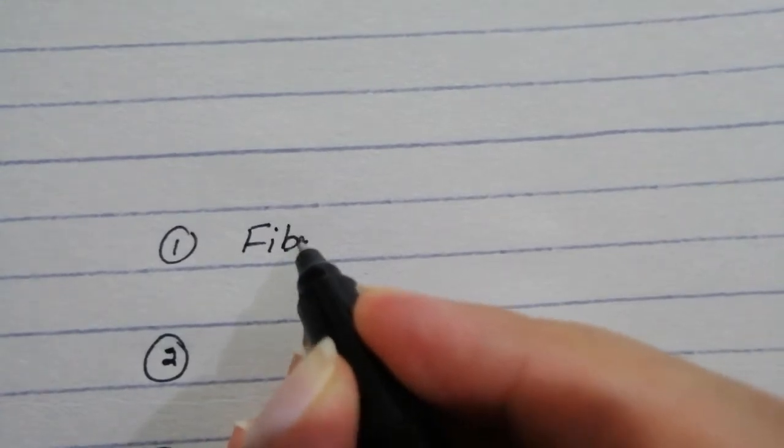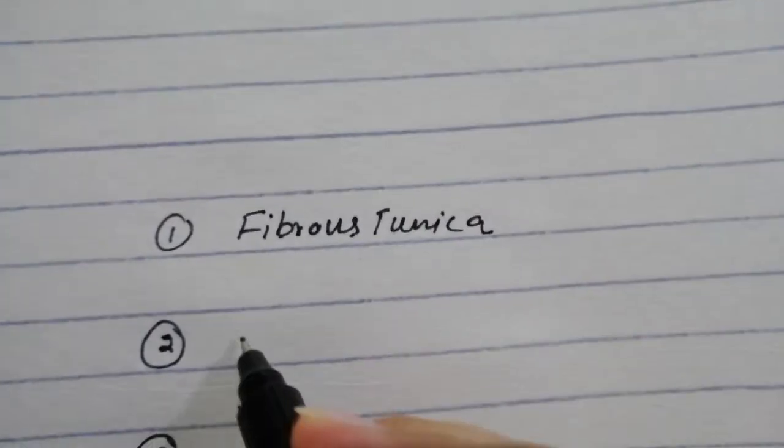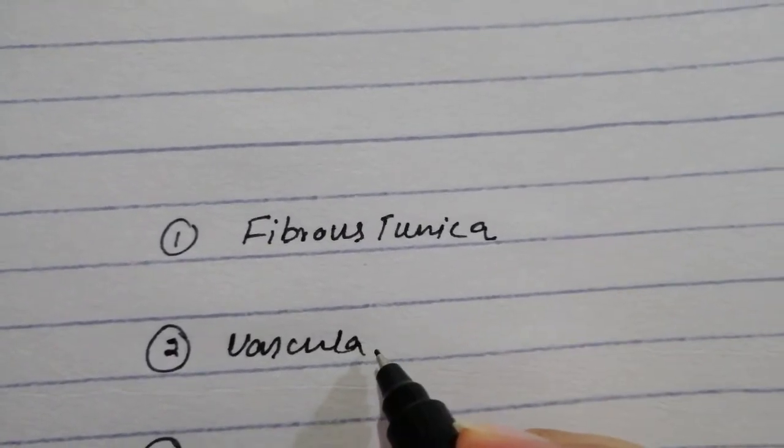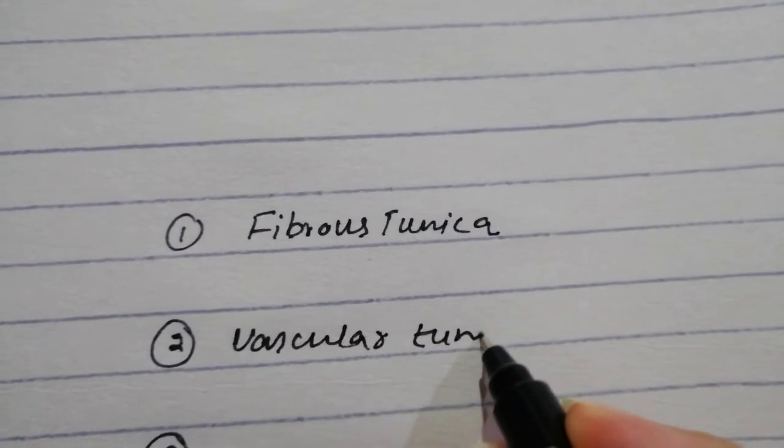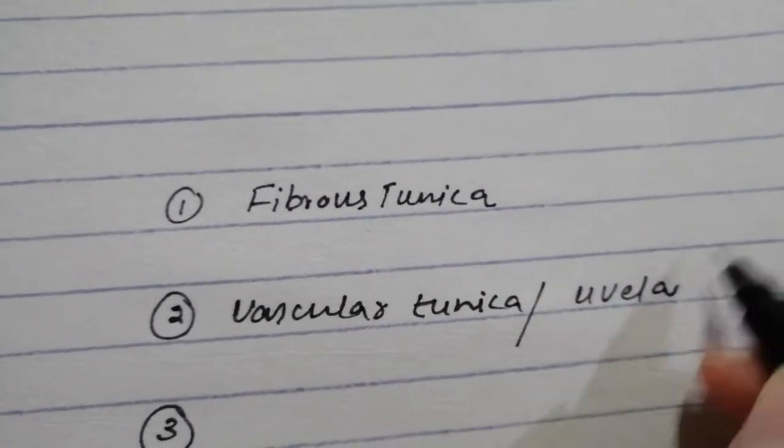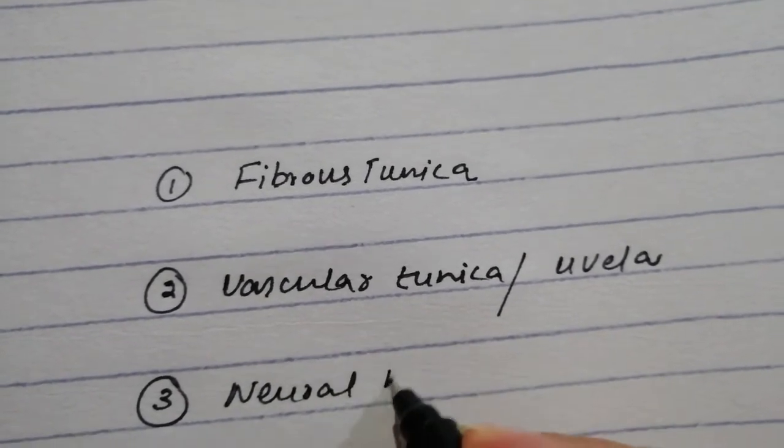The three tunics of the eyeball: we have the fibrous tunica which is outermost, then the vascular tunica which is in the middle and also known as the uvea, and then the last one which is the neural tunica also known as the retina.